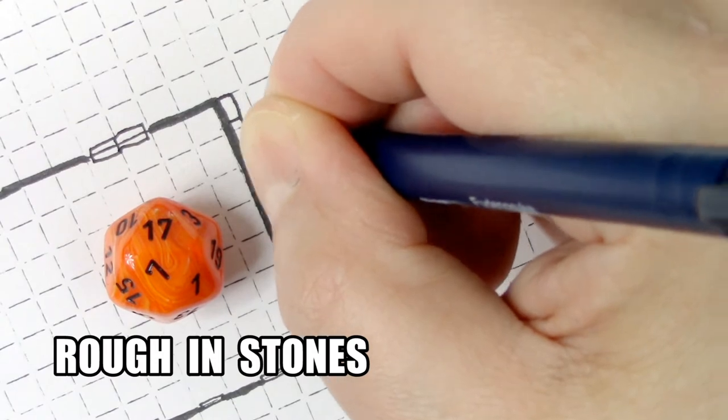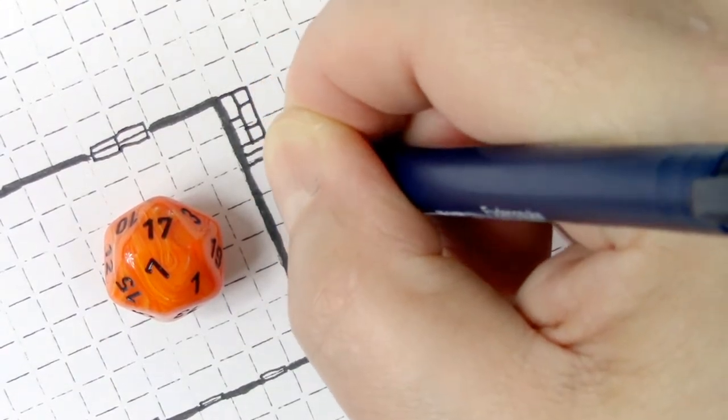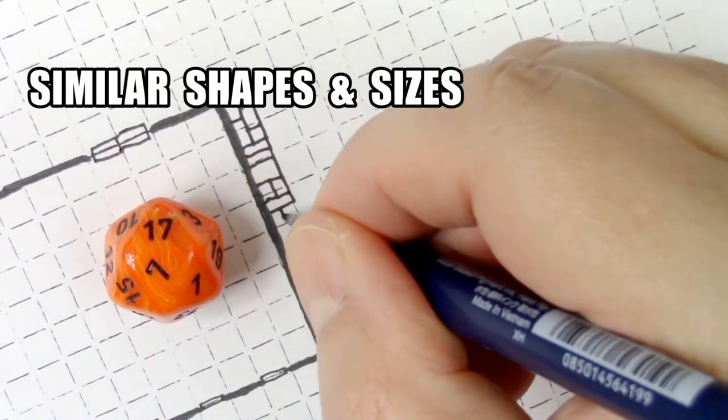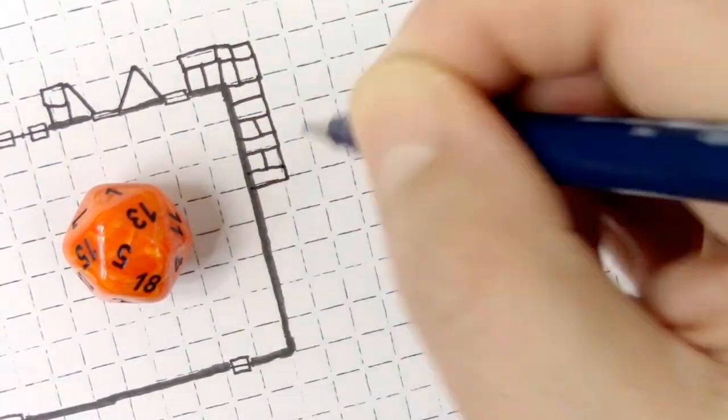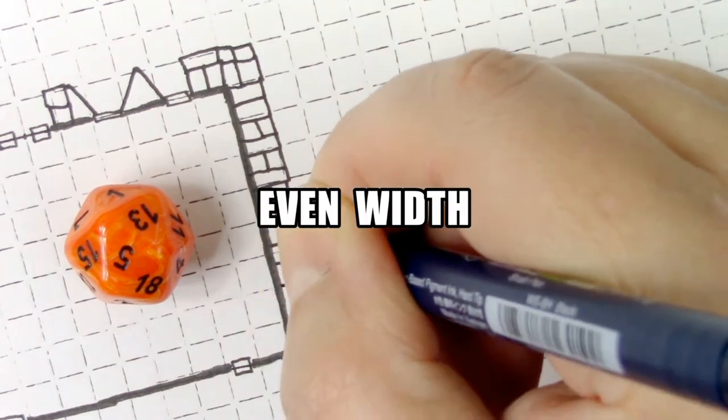Then we begin roughing in our stones. When we do this, we only really want to have similar shapes and sizes to the stones. You don't have to worry too much about what the stones look like. The only good rule is you want a nice even width to all these stones that you're putting in.